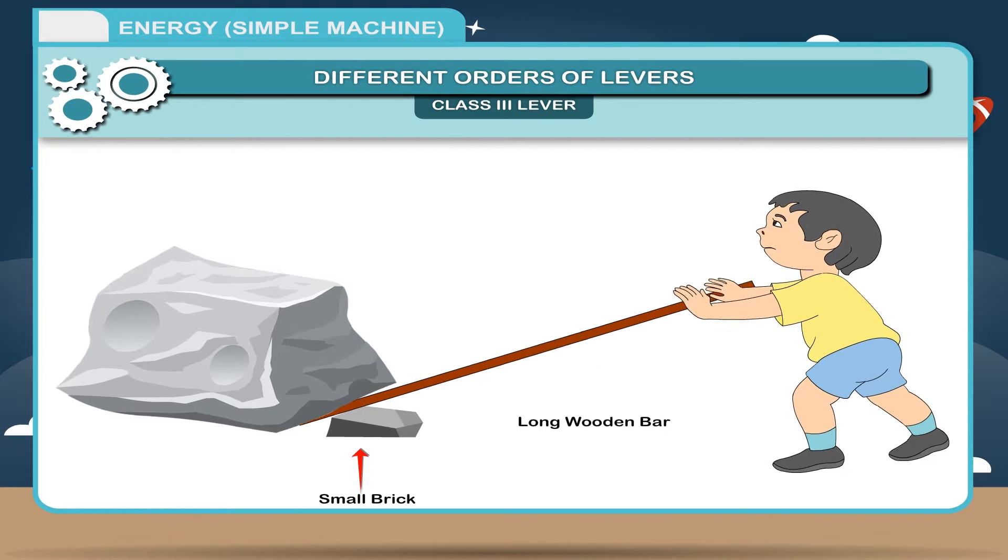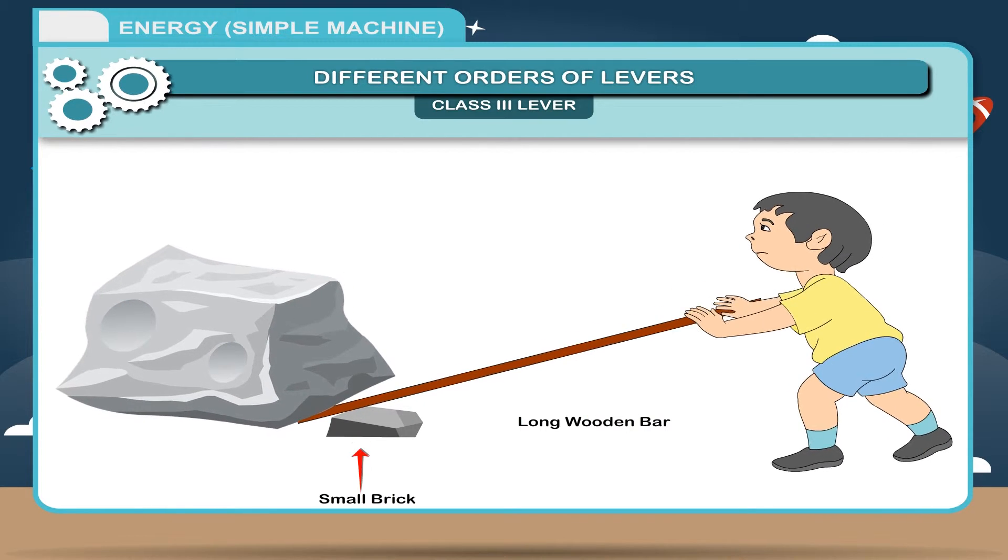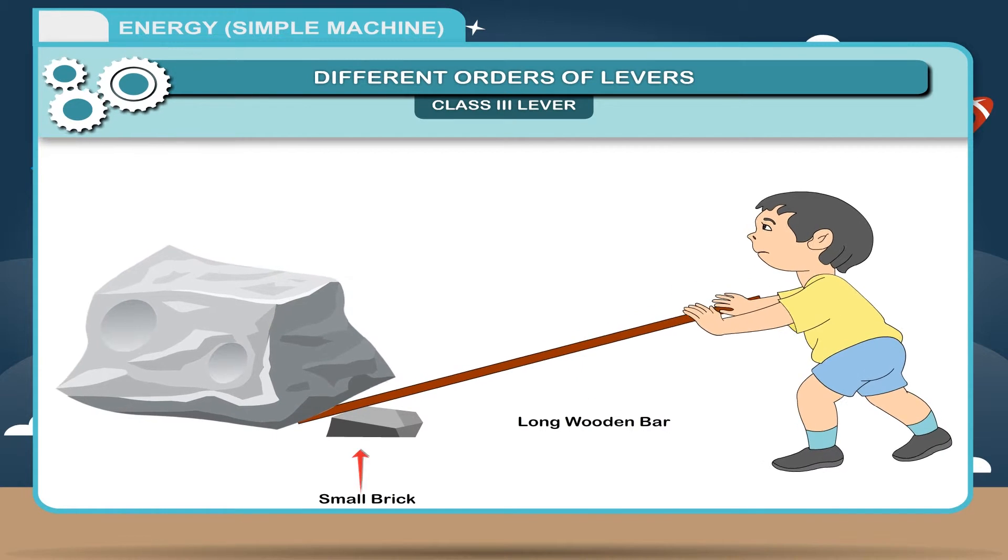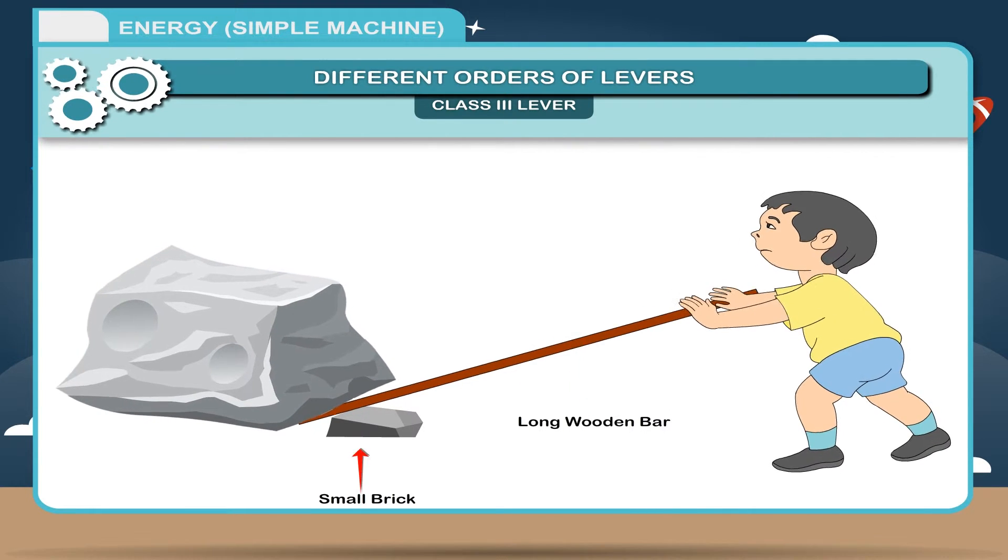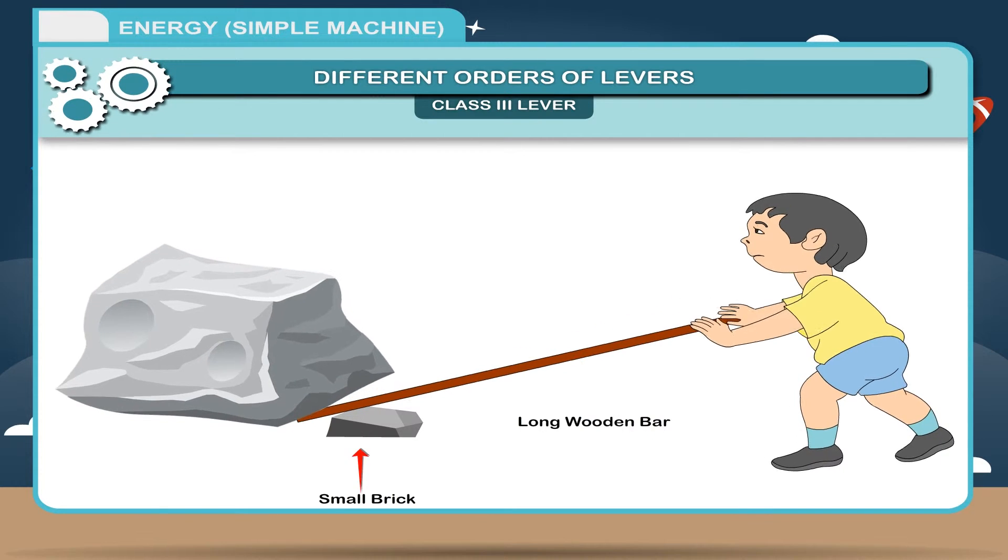From this activity, we conclude that the long wooden bar starts acting like a machine, which makes the work easier and with the application of less effort, the stone can be shifted.